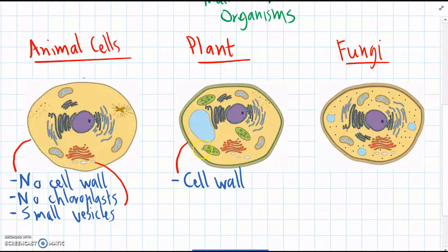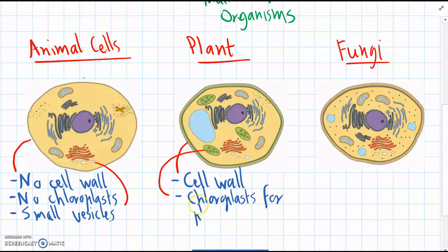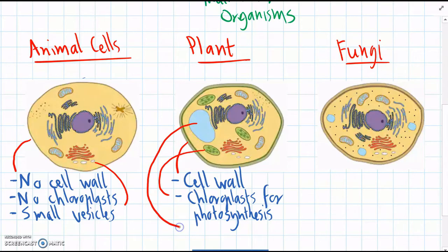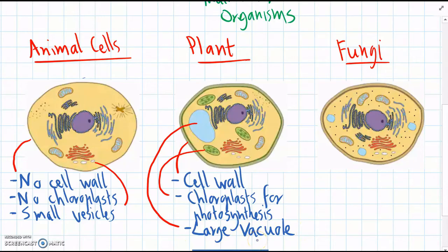We can also see that plant cells have chloroplasts for photosynthesis. And then the final clue for figuring out a plant cell is a really large vesicle — these are actually called a vacuole. That's one of the easiest ways to identify a plant cell: there's one really big vacuole in the middle, which plants use to store lots of different chemicals.